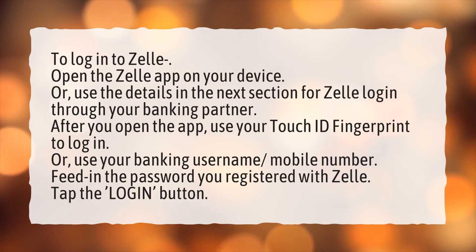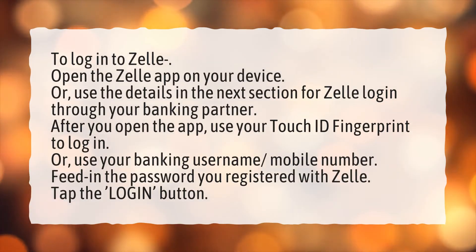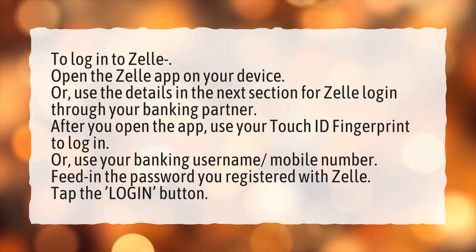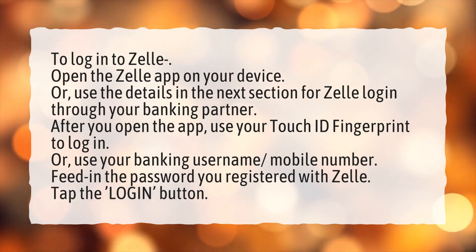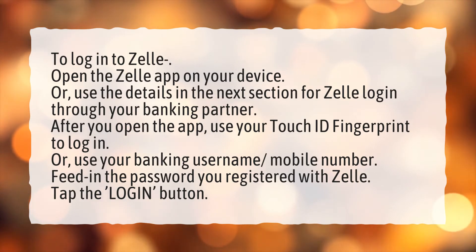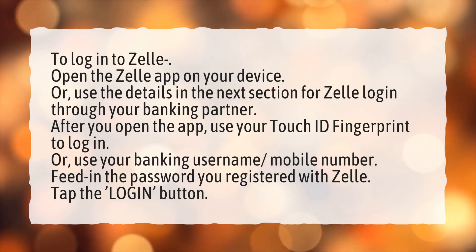To log in to Zelle, open the Zelle app on your device, or use the details in the next section for Zelle login through your banking partner. After you open the app, use your Touch ID fingerprint to log in, or use your banking username and mobile number. Enter the password you registered with Zelle, then tap the Login button.